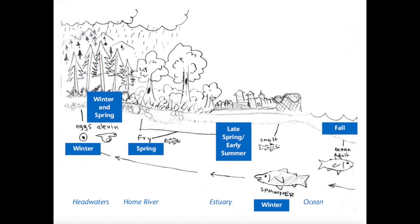Let's talk about the answers for what seasons we would likely see each of the life stages. We already talked about the egg — we'd likely see it during the winter. The alvins hatch from their eggs, and we'd likely see them in the winter and spring. The fry are starting to slowly move around, and we see them in the spring when there's less water. The smolts are in the estuary and need lower water levels so they don't get washed into the ocean while getting bigger and stronger. When they're ready to be ocean adults, that's in the fall at the first start of rain. And the spawners wait for that big rainstorm that usually happens during the winter.